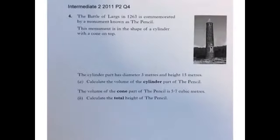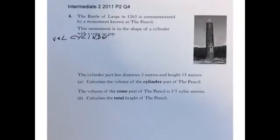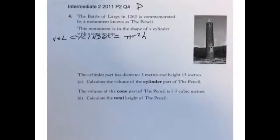Well, firstly we need to calculate the volume of the cylinder. The volume of the cylinder is equal to pi r squared h. In this case we know that the diameter is equal to 3, so the radius is 3 divided by 2, which is 1.5 for the cylinder.